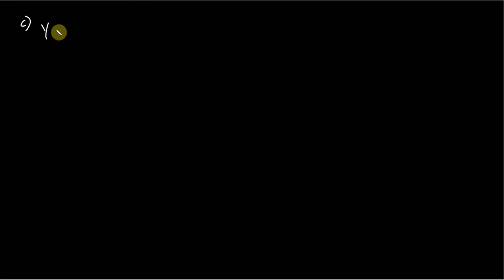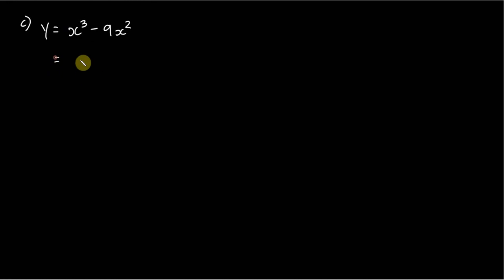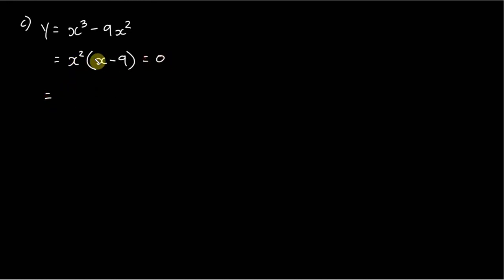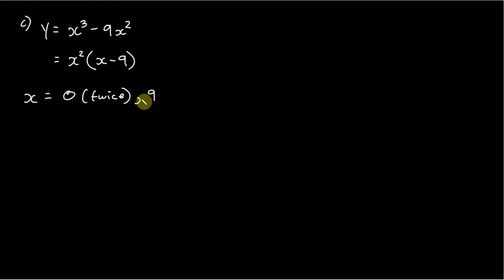I'll do one more. This one looks interesting. We have y equals x cubed minus 9x squared. Again we have a common factor — in fact we can factor out an x squared — leaving x squared times x minus 9. So our solutions for x: x equals 0 twice, and x equals 9. We've got a root at 0 with multiplicity 2, and a root at positive 9.